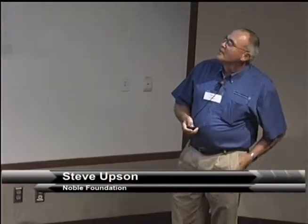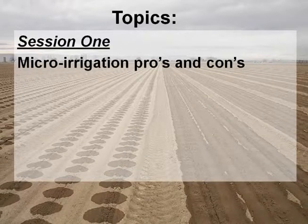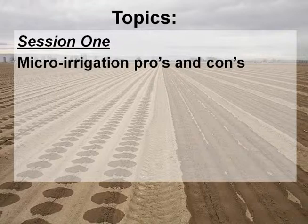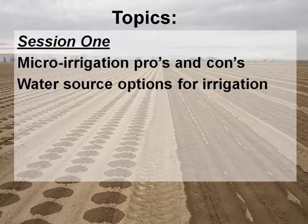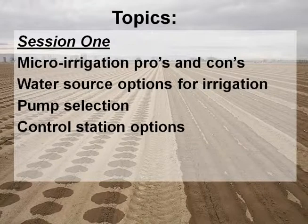Here's what we're going to cover tonight. First part, we're gonna look at the pros and cons of micro irrigation — we're going to confine ourselves to drip and micro sprinklers because that's what we're most familiar with and we only have time for that tonight. We're gonna look at water source options for irrigation, pump selection, and control station options. The control station refers to those components in a drip system that condition the water — whether it be water quality, pressure, or quantity — so we can get it to the field.